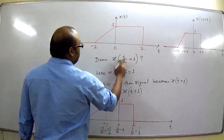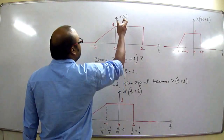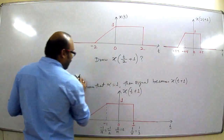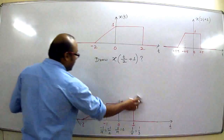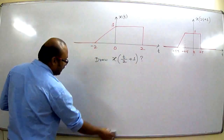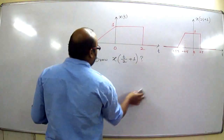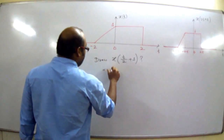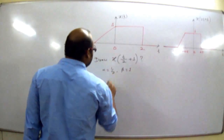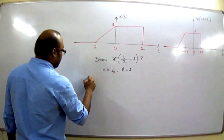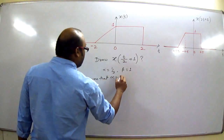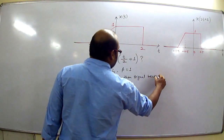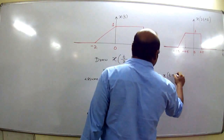We have to draw x(t/2 + 1), meaning we have to modify x(t) in the form of x(αt + β). Here α is 1/2 and β is 1. First of all, we consider α = 1 and we draw x(t + 1).